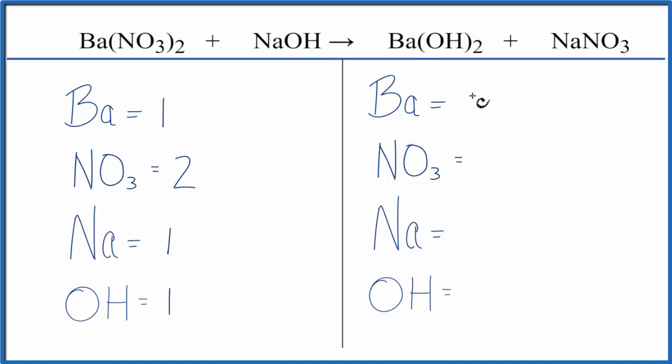On the product side, barium, we have one, one nitrate, one sodium. And the hydroxide, we have the one times the two. We have two of those.